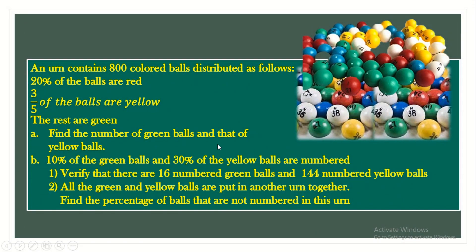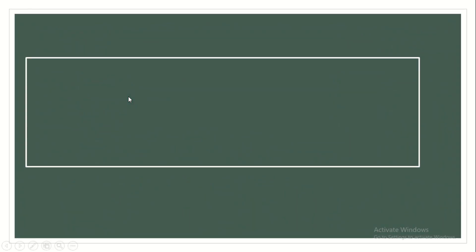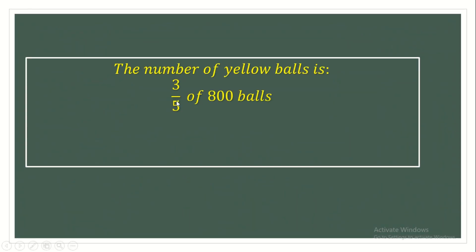We still need to find the number of yellow balls. We have 3/5 of the 800 balls are yellow. So the number of yellow balls is 3/5 times 800, which gives us 480 balls.